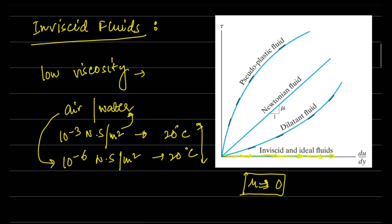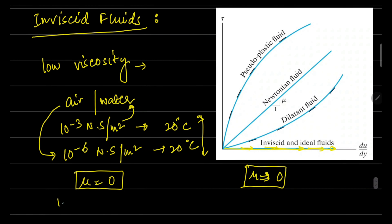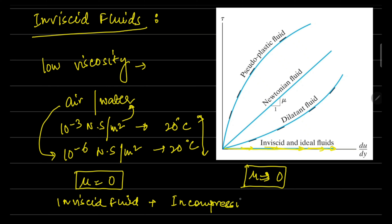A fluid with zero viscosity is called an inviscid fluid. If that fluid is also incompressible, it is categorized as an ideal fluid. In other words, any incompressible inviscid fluid is called an ideal fluid.